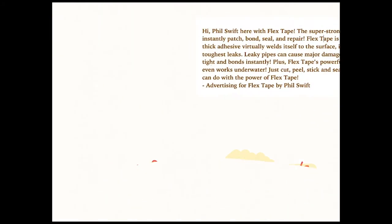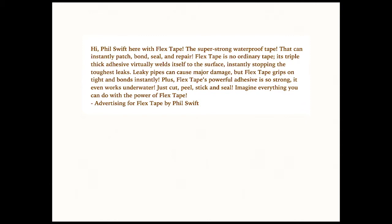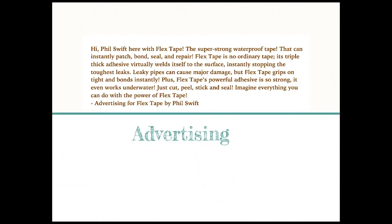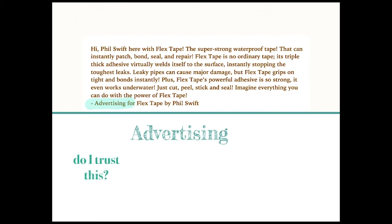Now let's try a different type of paragraph. This is an advertisement for a product. Pause and read. Okay, so we know that it's an advertisement. Do I trust it? I don't really trust it. What does this writing want from me? It wants to sell me something — it wants me to purchase this product, to buy tape. And I read these very strong emotional words, and I think it's strange to have such powerful emotion about a piece of tape. So I don't trust it.